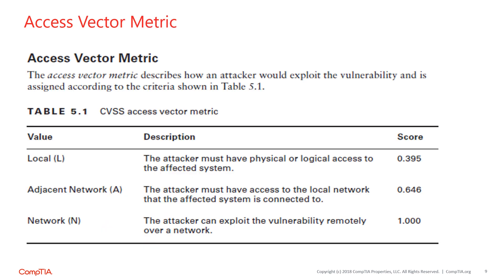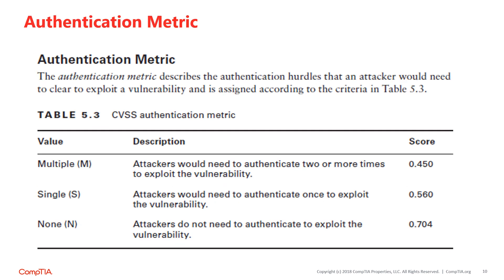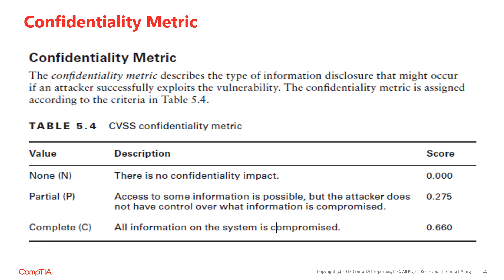The access vector metric describes how an attacker would exploit the vulnerability and is assigned according to the criteria shown in the table. The authentication metric describes the authentication hurdles that an attacker would need to clear to exploit a vulnerability. The confidentiality metric describes the type of information disclosure that might occur if an attacker successfully exploits the vulnerability, and is also assigned according to the criteria in the table.